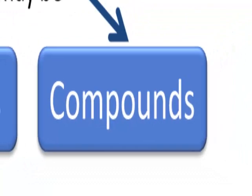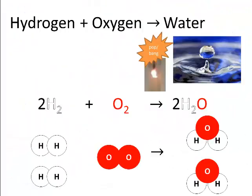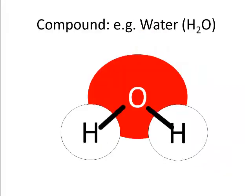Water is an example of a compound. You can make water by reacting hydrogen gas with oxygen gas. It makes a big bang or a pop if you just have a little bit. And the hydrogen and the oxygen bond together. That pop is the release of energy as the two bond together.